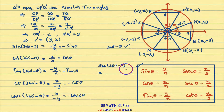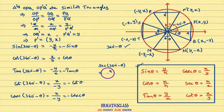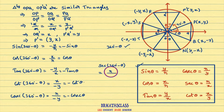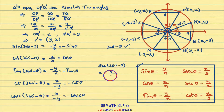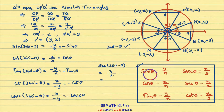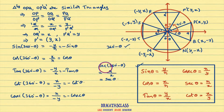Secant theta is defined as the radius of the circle divided by the x coordinate. So secant(360° − θ) is the radius divided by the x coordinate of point B. The x coordinate of point B is x, so that equals r by x. Since r by x is secant theta, therefore secant(360° − θ) = secant θ.